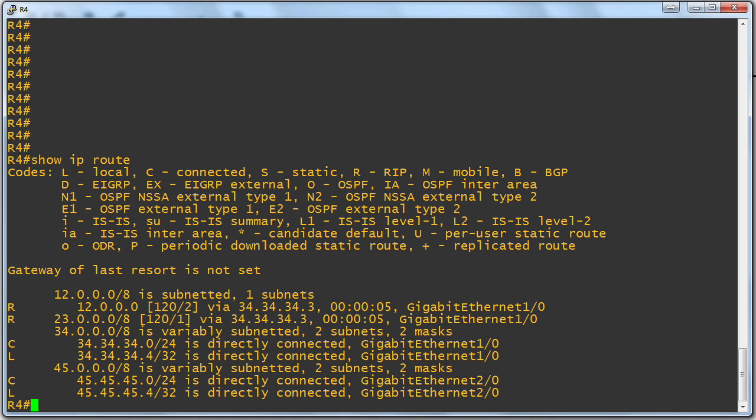Next up is R4. On R4, yes indeed, we have the RIP route for the 12 network, and just as we expected, the metric is indeed a hop count of two at this point in the overall network.